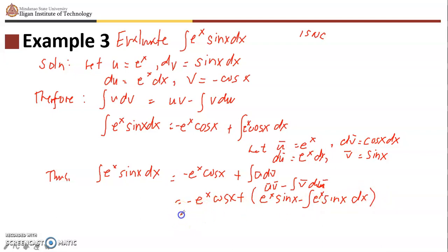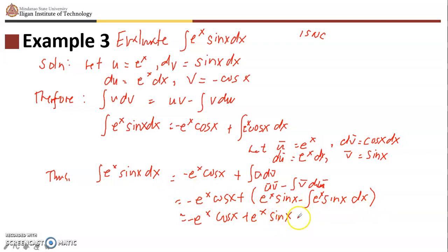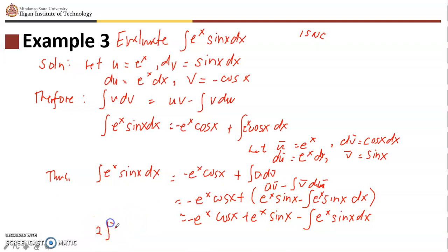Notice that the integral of e to the x sine x dx appears on both sides of the equation. We can transpose it to the left side — it becomes a plus — so we now have twice the integral of e to the x sine x dx on the left side.